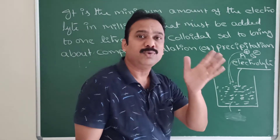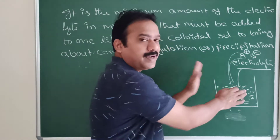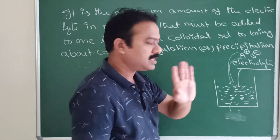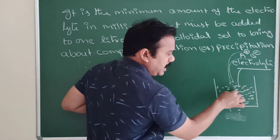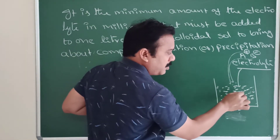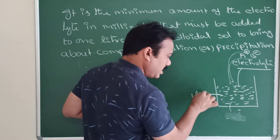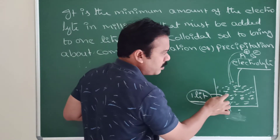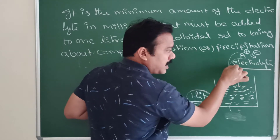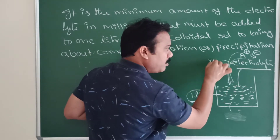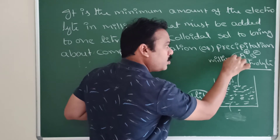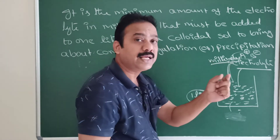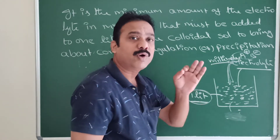Now I am going to explain the flocculation value — this is how we define it. Consider 1 liter of a lyophobic sol, which may be positively or negatively charged. The amount of electrolyte in millimoles that is required to precipitate that sol is called the flocculation value, or coagulating value.